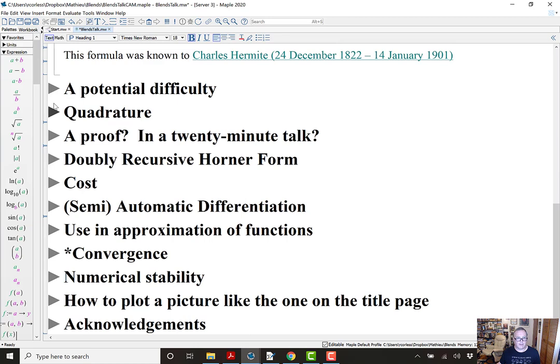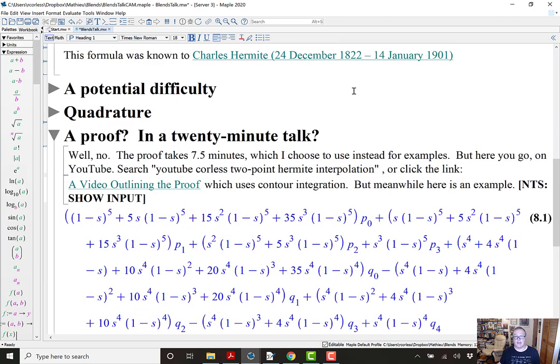Well, that's a lovely formula. So, maybe I should prove it for you. Well, I'm not going to do that. The proof takes seven and a half minutes, which I choose to use instead for examples. But, if you really want a proof, if you search on YouTube, Corliss 2.hermite interpolation, or click the link that we've got here, you'll find a YouTube video.